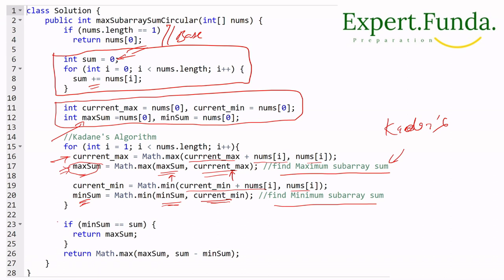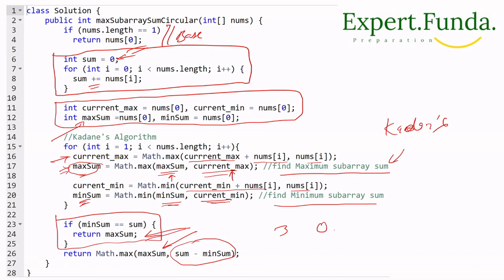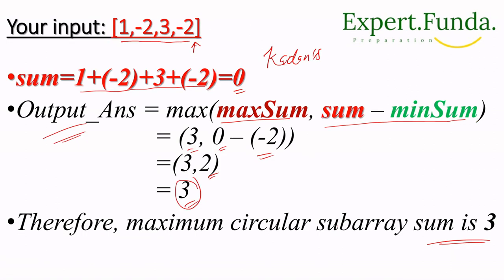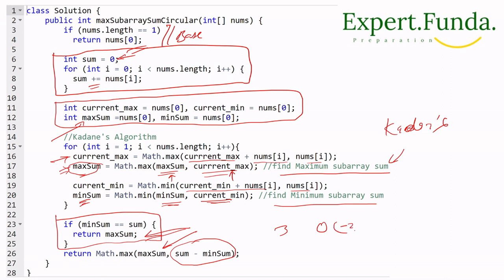Finally, we check: if min_sum equals total_sum (meaning the entire array is the minimum subarray — all elements are negative), we return max_sum directly. Otherwise, we return Math.max(max_sum, total_sum - min_sum), where total_sum - min_sum gives the circular subarray sum. In our example: max(3, 0 - (-2)) = max(3, 2) = 3.